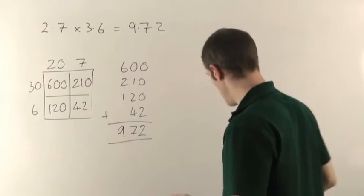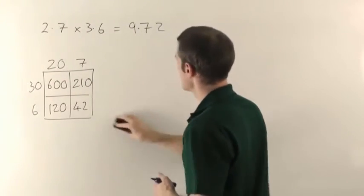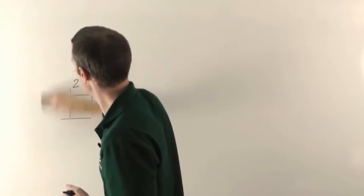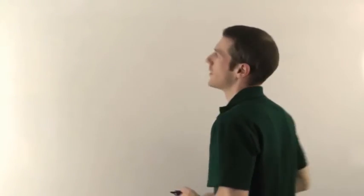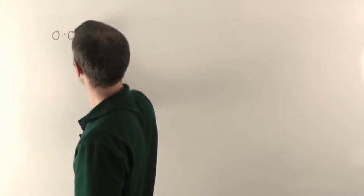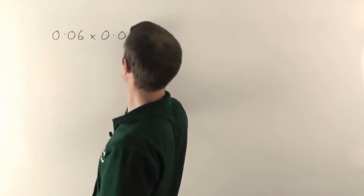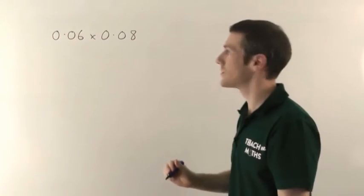We'll just do one more to show you a slightly different one, but hopefully you get the idea. All right, so it's going to be 0.06 times 0.08. A lot of zeros there.